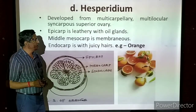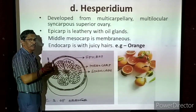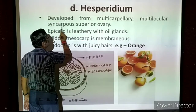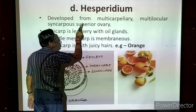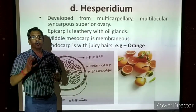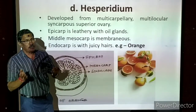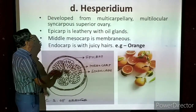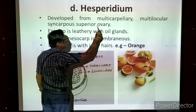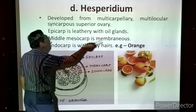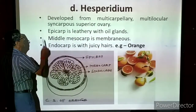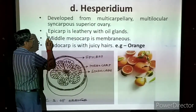In hesperidium, the carpels are syncarpous — fused, touching margin to margin — and the ovary is superior, meaning the ovary is on top and the other floral parts are present below. So this fruit is developed from a multicarpellary, multilocular, syncarpous superior ovary.